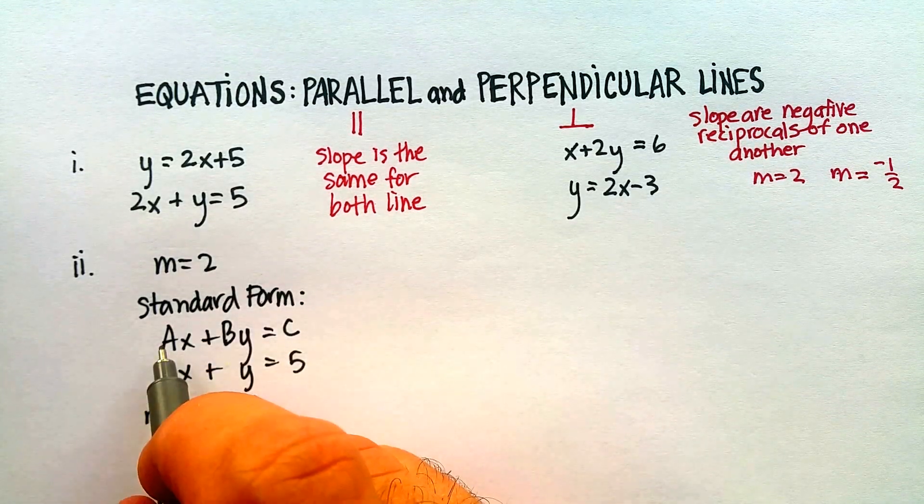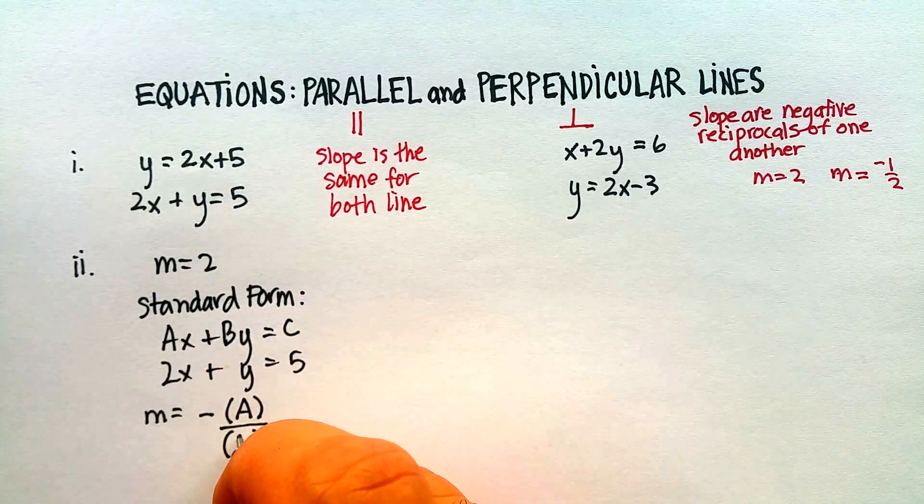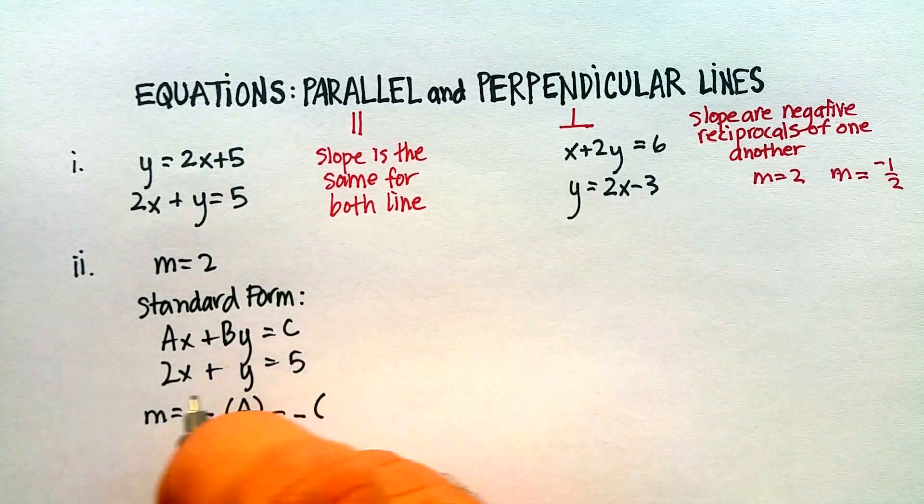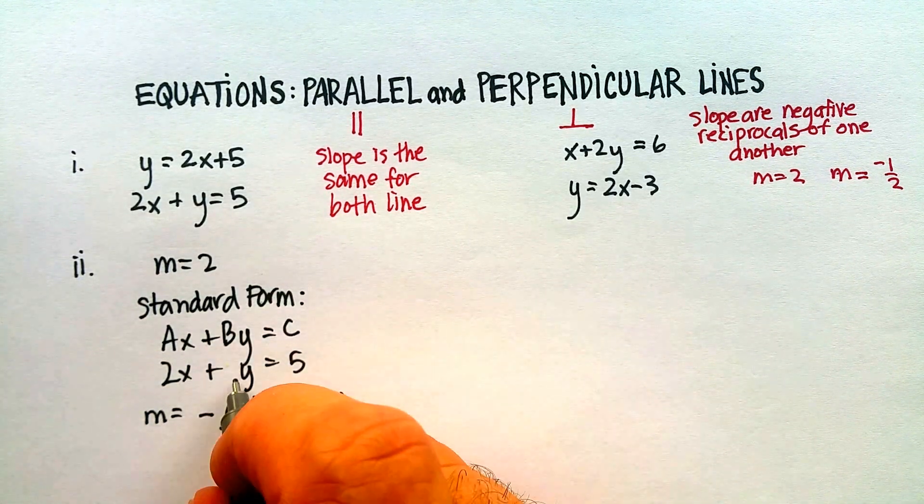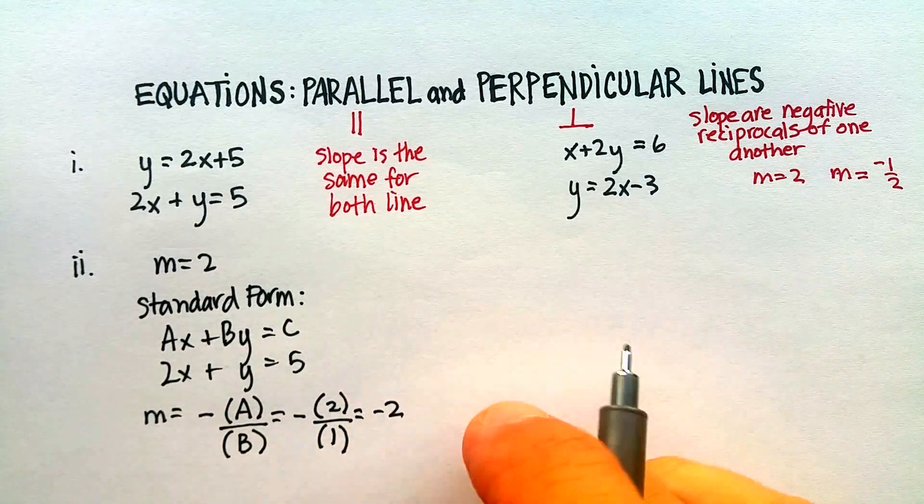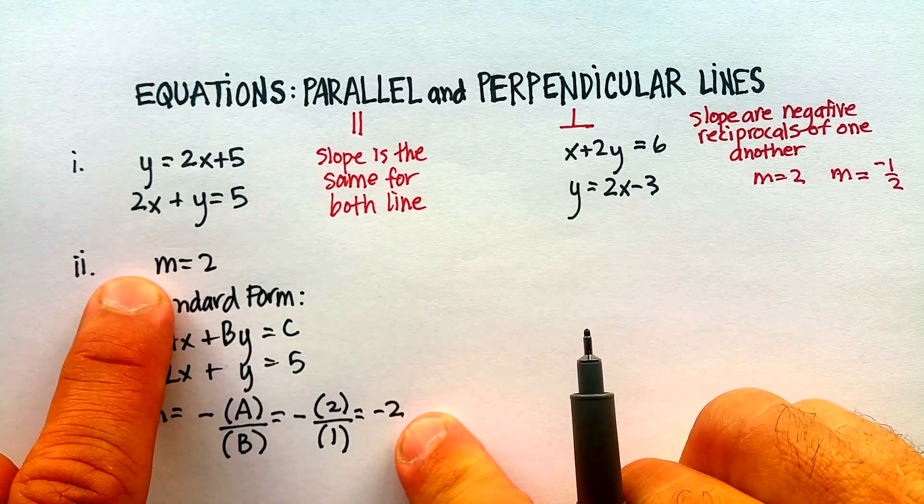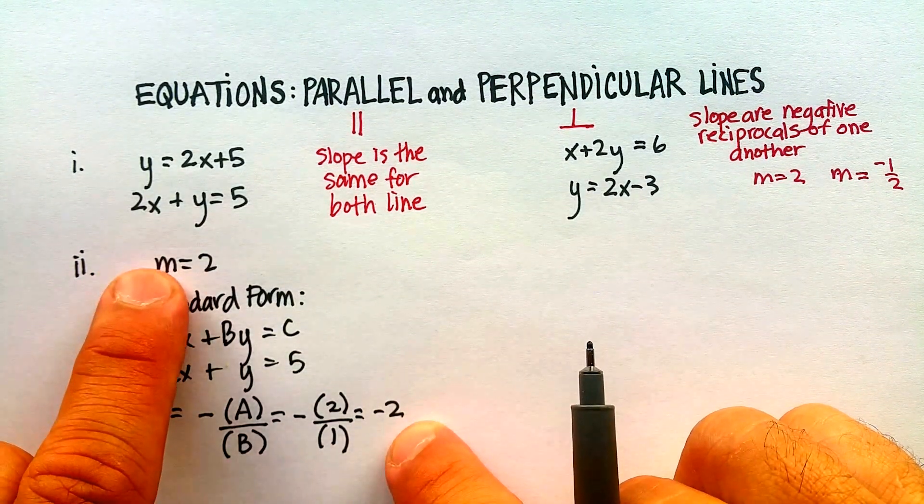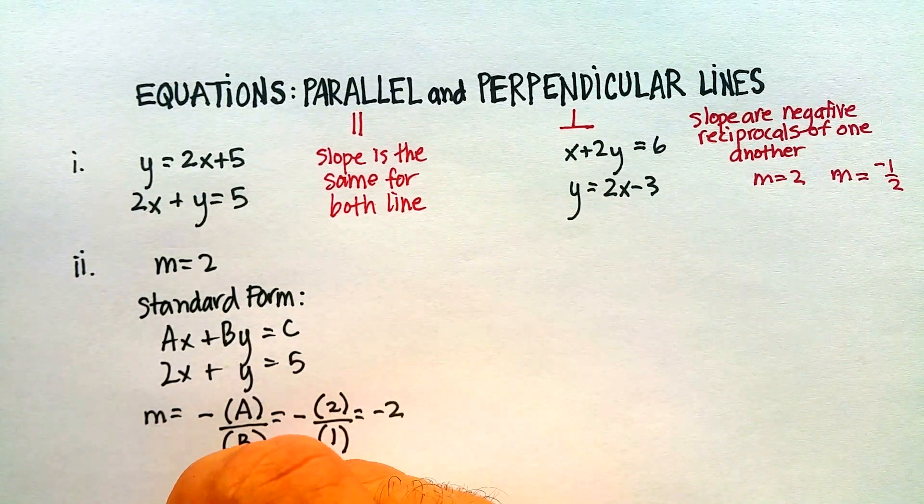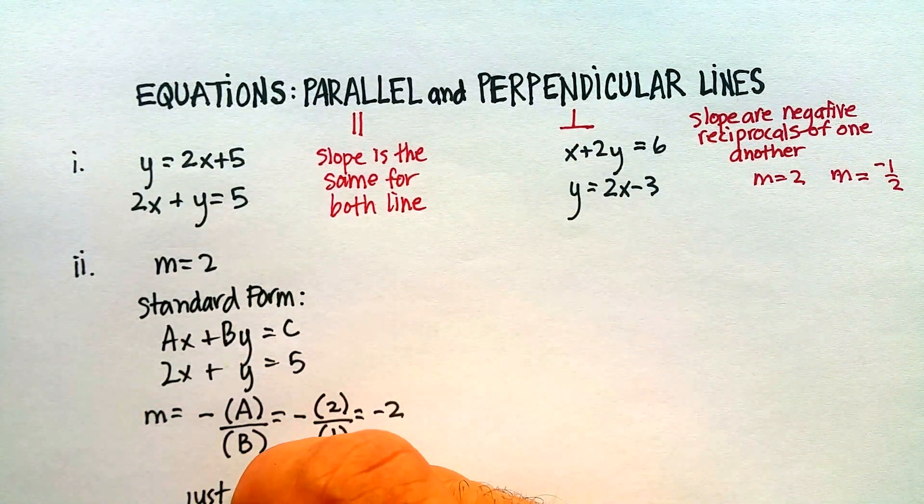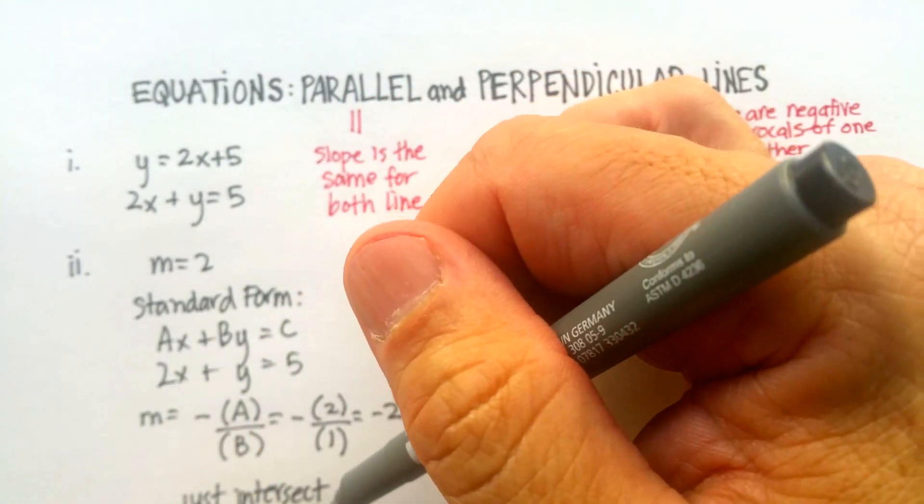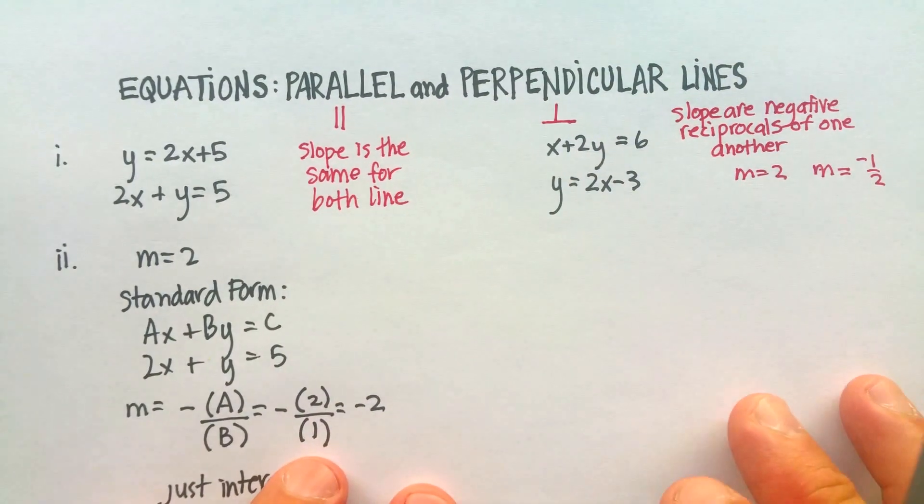The slope for this kind of an equation is negative, and then in parentheses, whatever the A coefficient is over whatever the B coefficient is. In this case, it would be negative 2 is A coefficient, 1 is the coefficient. So the slope would be negative 2. So are these two slopes exactly the same? And they're not, because one's negative, one's positive. You would say, therefore, that these two equations just intersect. You could also go ahead and graph them, and you could see the same thing. Let's move to the next problem.